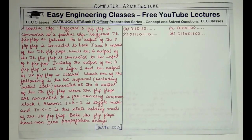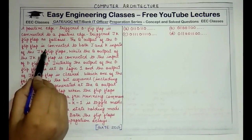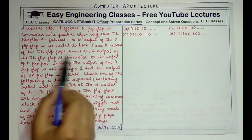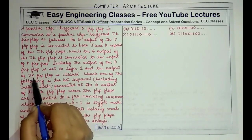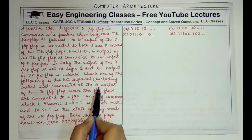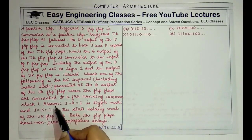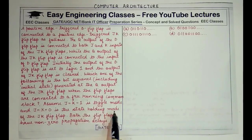A positive edge triggered D flip-flop is connected to a positive edge triggered JK flip-flop. The Q output of the D flip-flop is connected to both J and K inputs of the JK flip-flop, while the Q output of the JK flip-flop is connected to the input of the D flip-flop. Initially, the output of the D flip-flop is set to logic 1 and the output of the JK flip-flop is cleared. We have to find the bit sequence including the initial state generated at the Q output of the JK flip-flop. J=K=1 is the toggle mode and J=K=0 is the state holding mode.